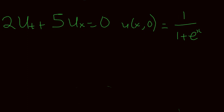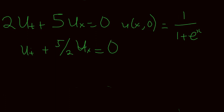This is a first-order differential equation, and once you have a first-order differential equation that only contains these derivatives in this form, you can convert it into a transport equation. To do that, I divide both sides by 2, getting u_t plus 5/2 u_x equal to 0. From here I know c equals 5 divided by 2.